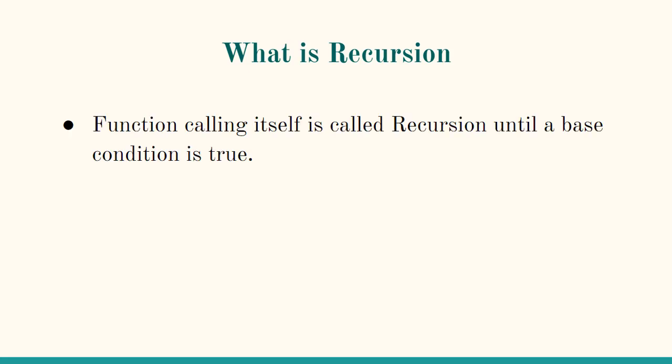Recursion is simply a function which calls itself. Whenever you have a function or a method in your program and that function calls itself, that concept is called recursion. And it calls itself until a base condition is true. As soon as the base condition is true it exits the recursion. We will see what it means in the further slide.